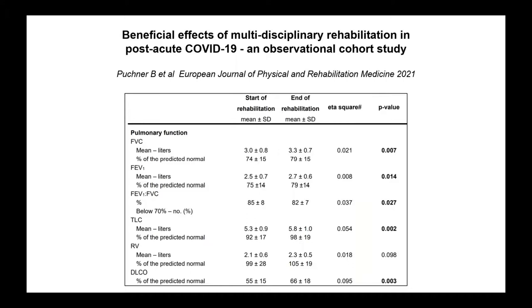Is it really necessary to perform pulmonary rehabilitation in these patients? One paper measured lung function at the start and end of rehabilitation and showed a small change in FVC and FEV1. But the change in DLCO is the most important one — which is highly significant. This shows that we need information about diffusion capacity during and after the disease to understand why respiratory symptoms may persist.